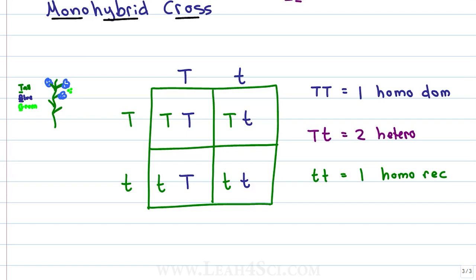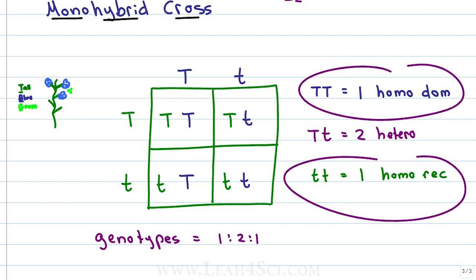Does this mean that every set of pea plants will only have four offspring? No, no, no. This is just a ratio. The ratio for the genotypes in a monohybrid cross is 1 to 2 to 1. We get 50% that are heterozygous and 50% that are homozygous, but the homozygous are half homozygous dominant and half homozygous recessive.